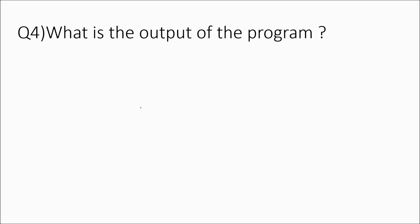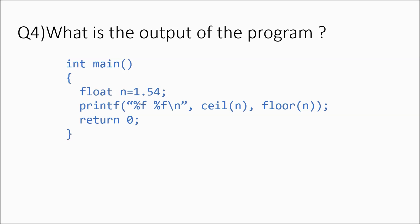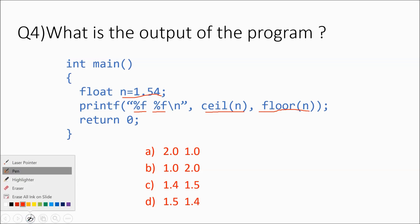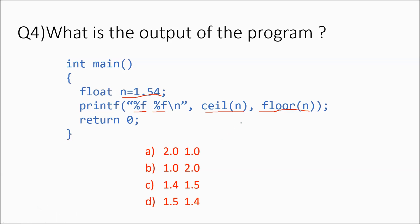The fourth question: what is the output of this program? We have float n = 1.54, and then printf with two %f specifiers for ceil(n) and floor(n). What are ceil and floor? 1.54 is a number between 1 and 2.